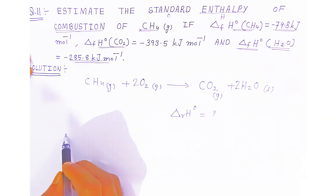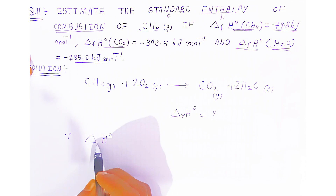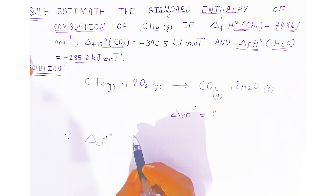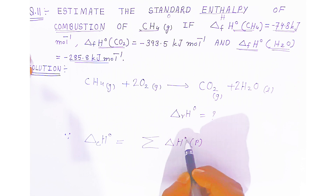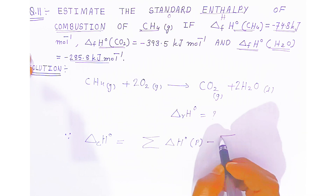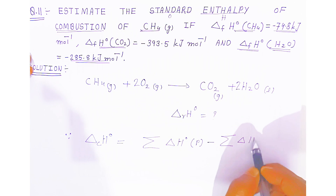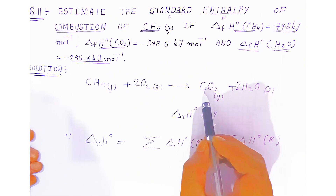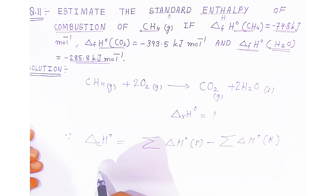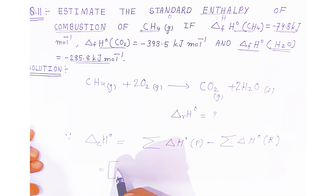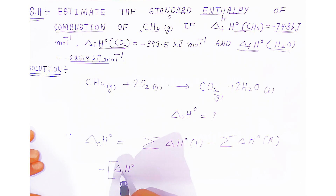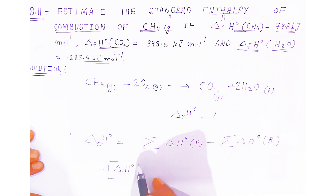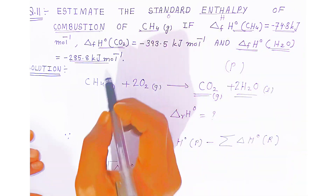To calculate the standard enthalpy of combustion, we use the formula: ΔH°combustion = sum of standard enthalpies of products minus sum of standard enthalpies of reactants. There are 2 products: CO₂ and 2H₂O. So we write: ΔH°(CO₂) + 2×ΔH°(H₂O) on the product side, and ΔH°(CH₄) + 2×ΔH°(O₂) on the reactant side.